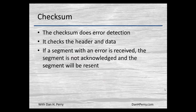The checksum doesn't do total error correction — it detects errors. It checks the header and data. When a segment is received with an error, the segment is not acknowledged. The receiver computes the checksum and compares it to the checksum field; if they're different, the segment is not acknowledged and will be retransmitted because the sender did not receive the acknowledgement.